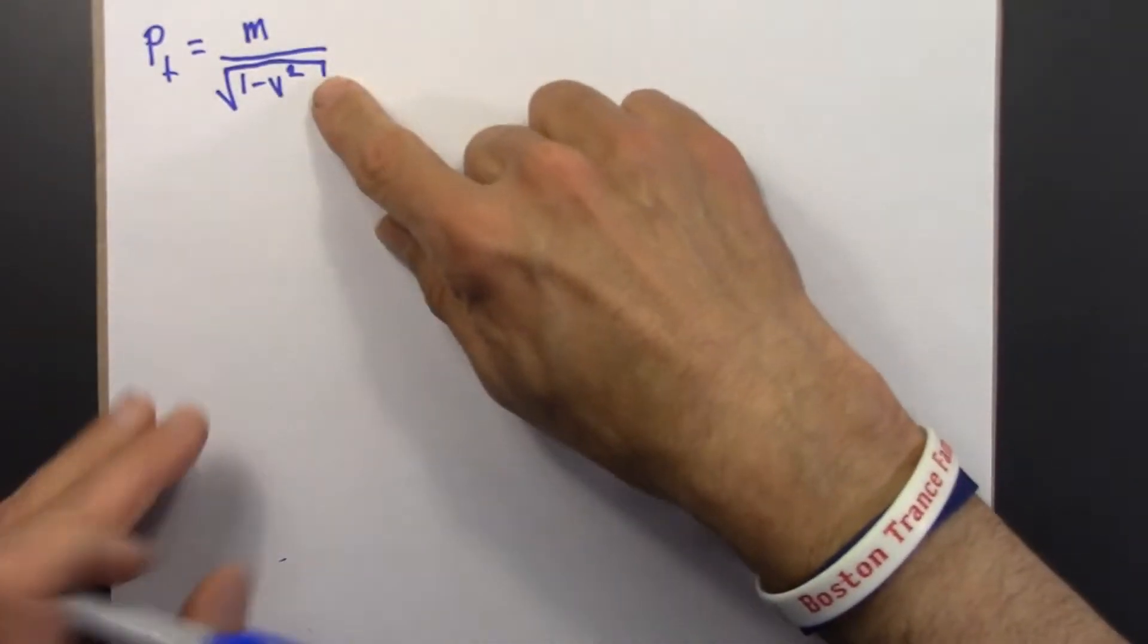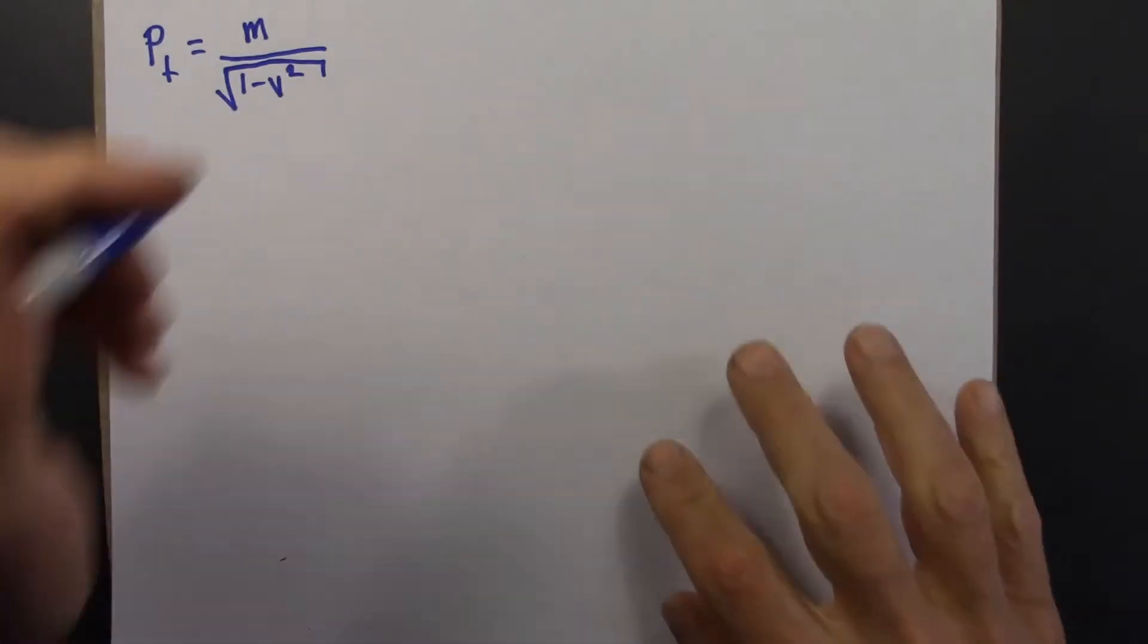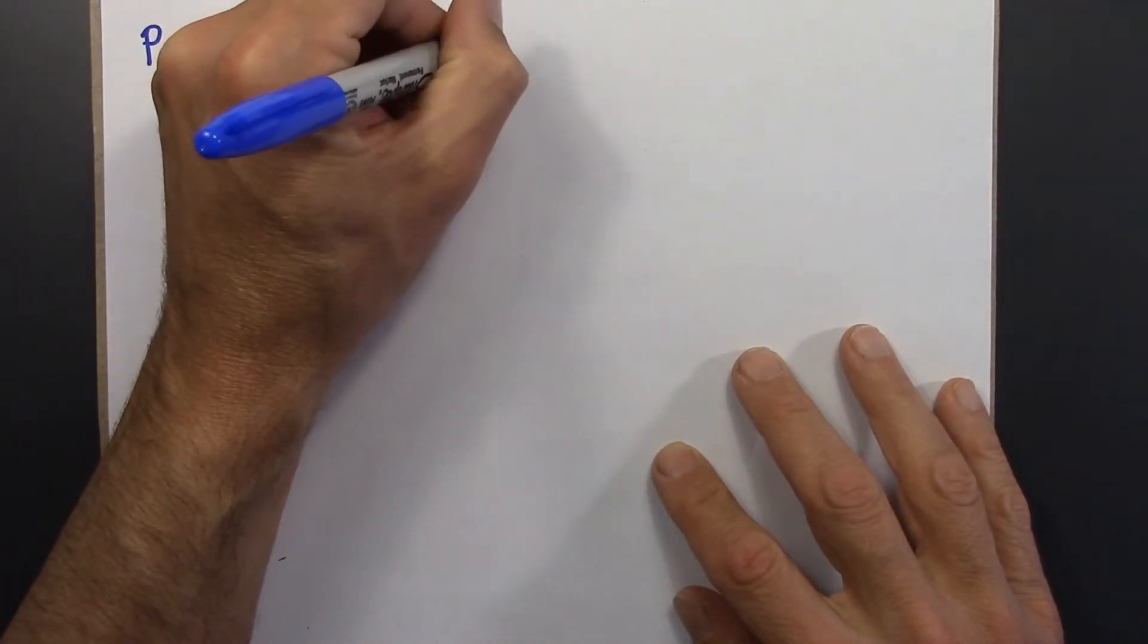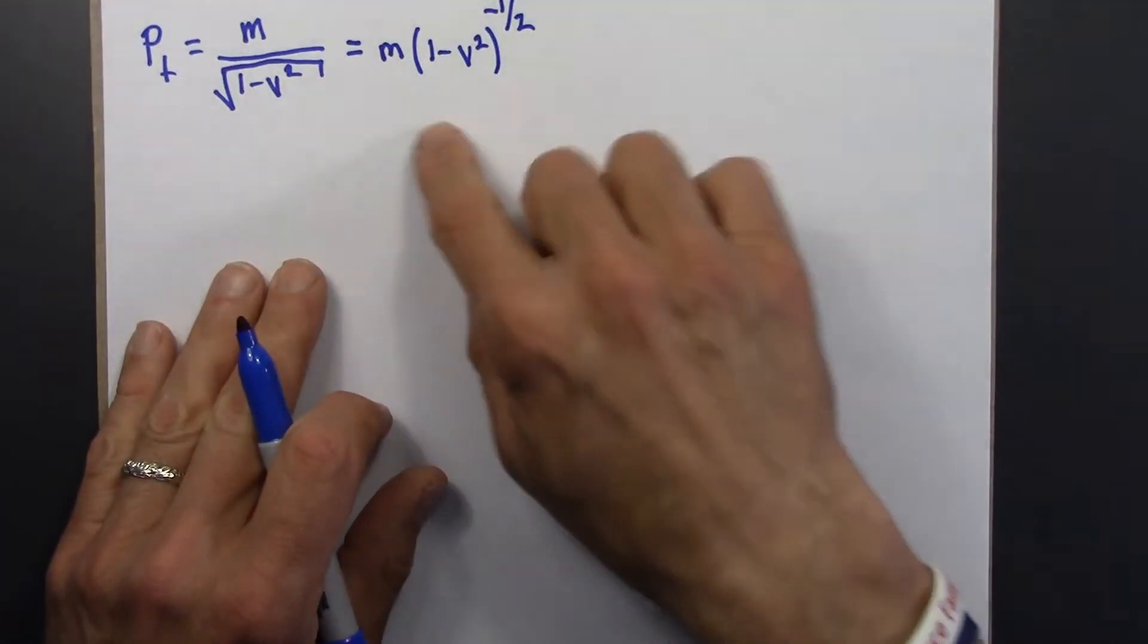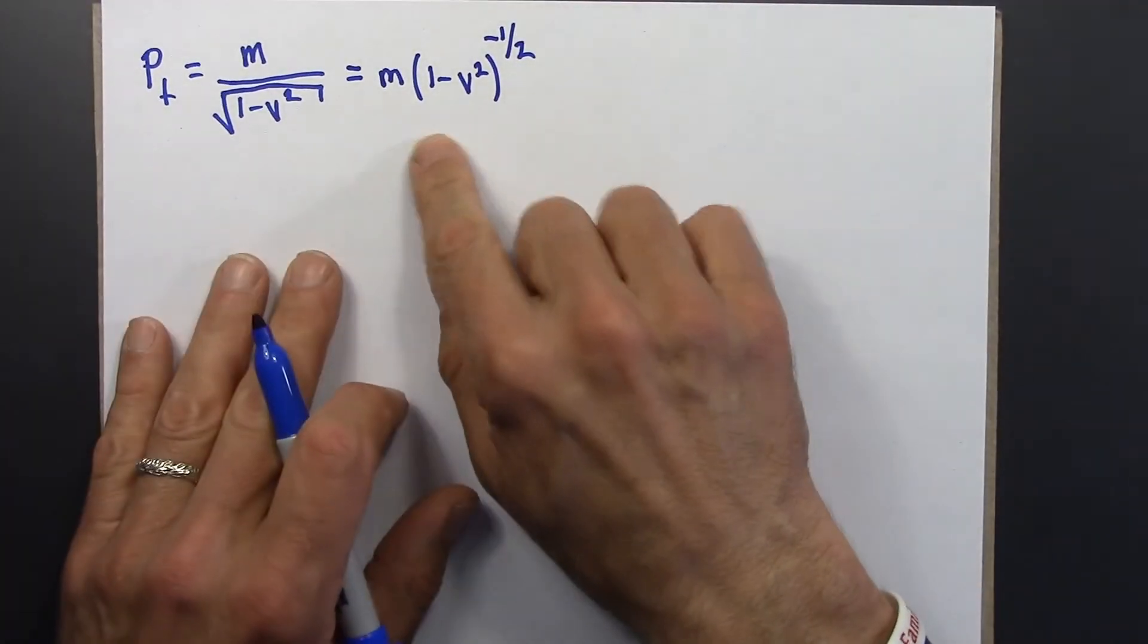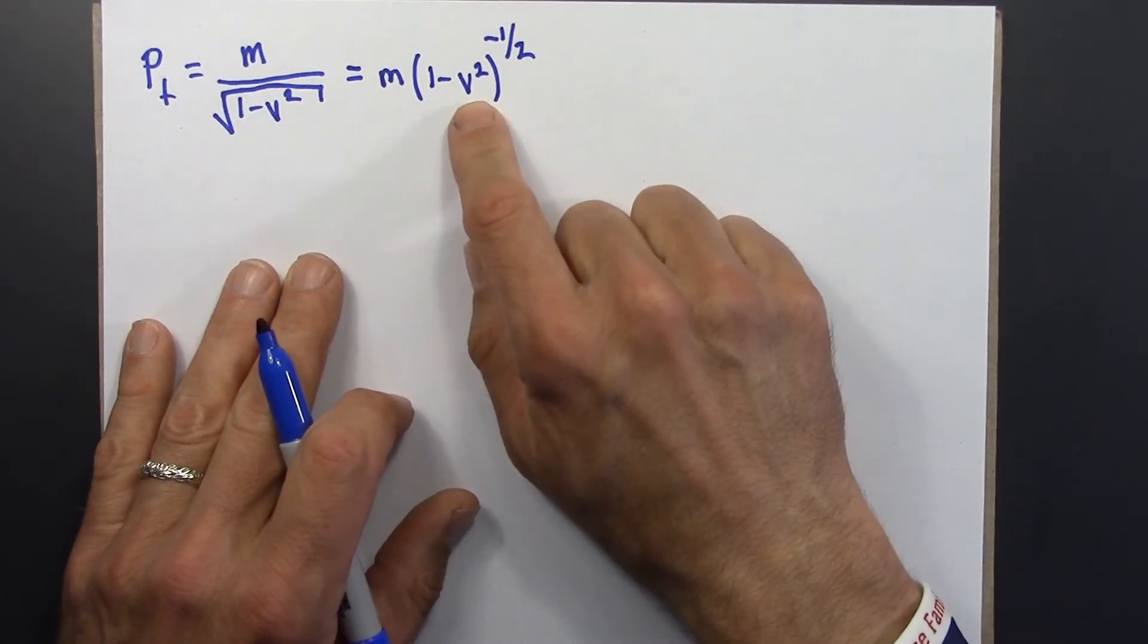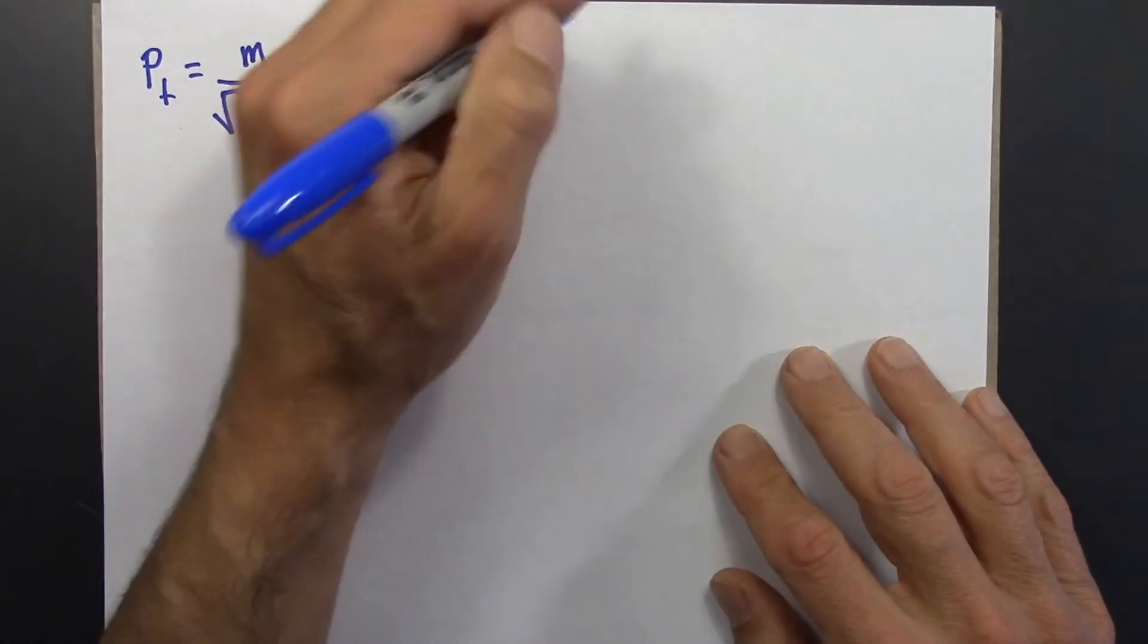So here's this formula again. I'm going to write this in a slightly different way using the laws of exponents. 1 minus v squared to the minus half. And in that form, it almost begs us to use the binomial approximation. So in the limit where v is small, I can use a binomial approximation for this. And we've done this before.